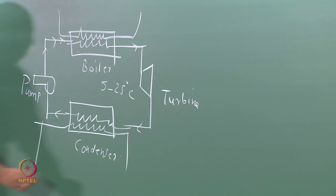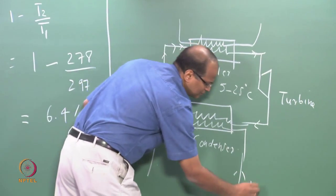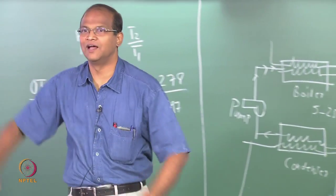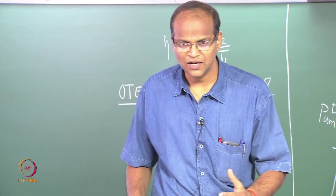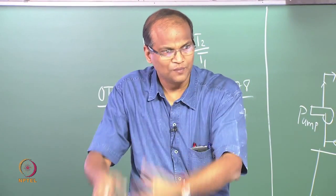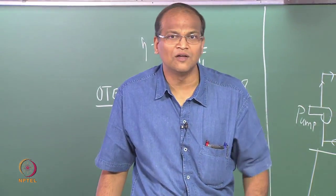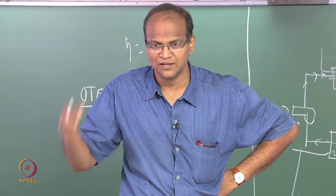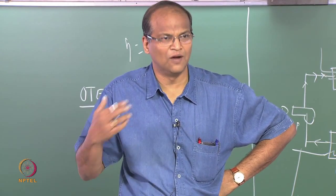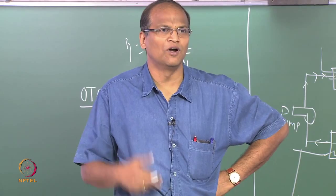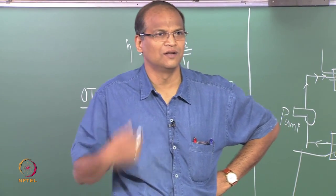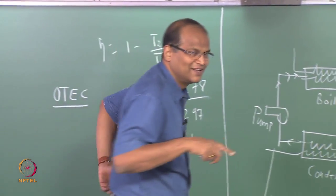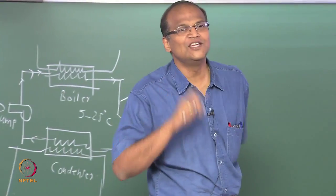Furthermore, the cold condenser water must be pumped from 1000 meters depth using high-density polyethylene pipes. Using the Darcy-Weisbach equation (FLV²/2GD), one finds that for a 1 megawatt plant, the pumping power for the cold water alone is 400–500 kilowatts — so you can end up producing negative net power. These are the critical engineering challenges involved in OTEC.